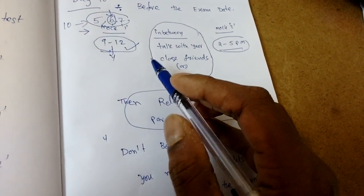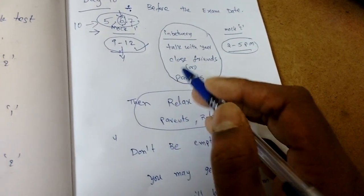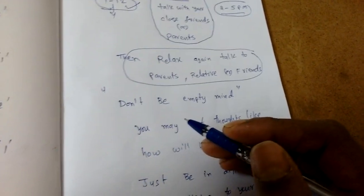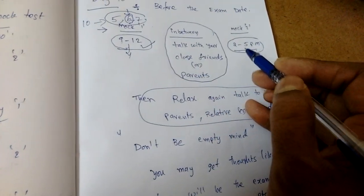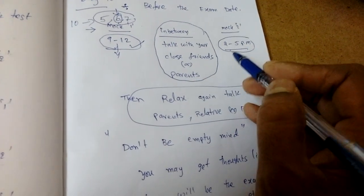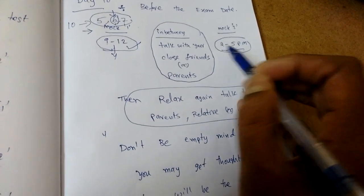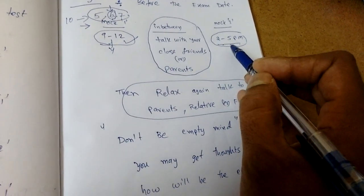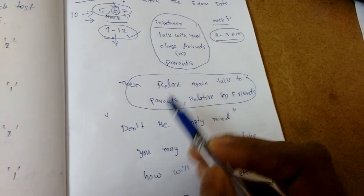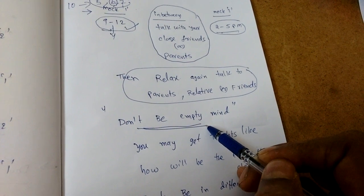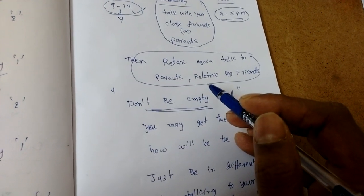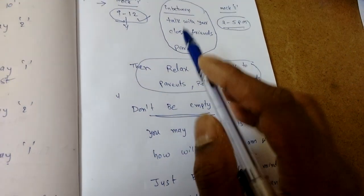Whenever you are in empty mind, thinking only about the GATE, you will get different thoughts like how will my performance be, or suppose you didn't get some concept in the mock test, you may be thinking those concepts again. Don't think about that. Just leave. How many marks you got, just see, and see only the formulas. Don't be empty minded before the exam.